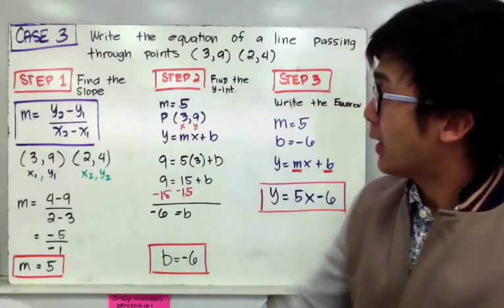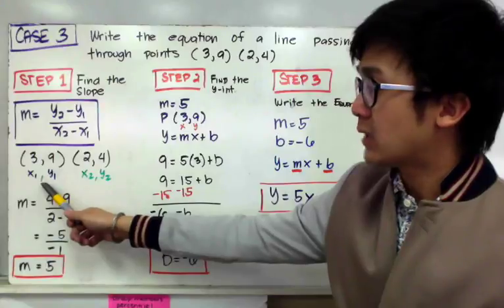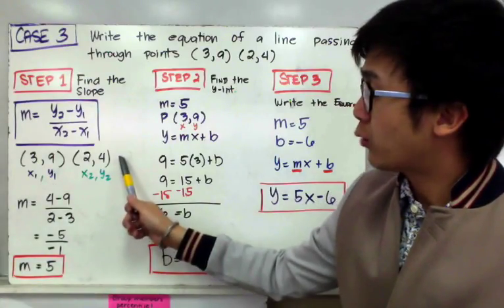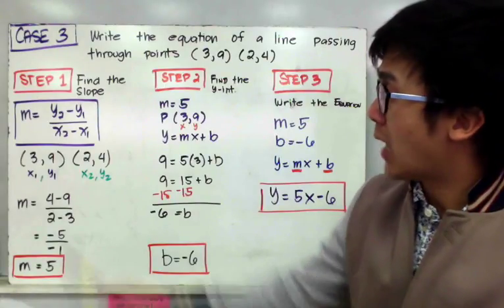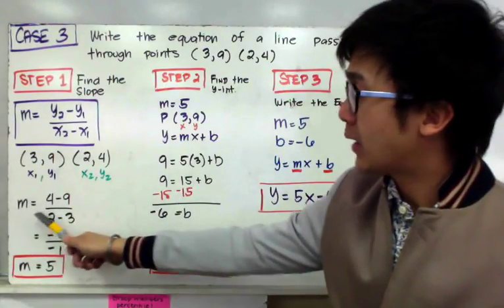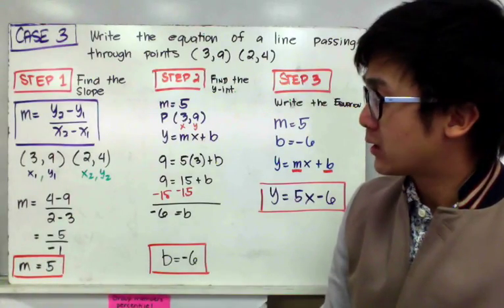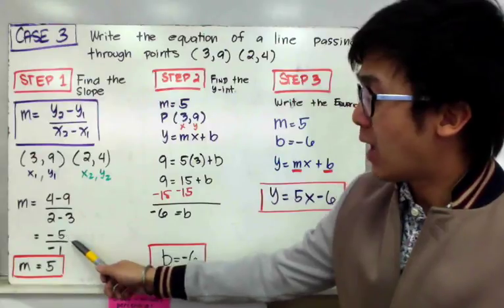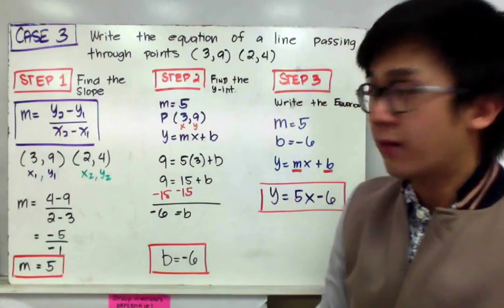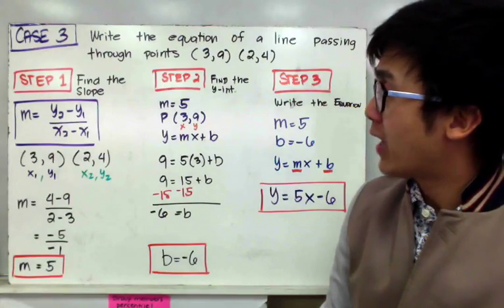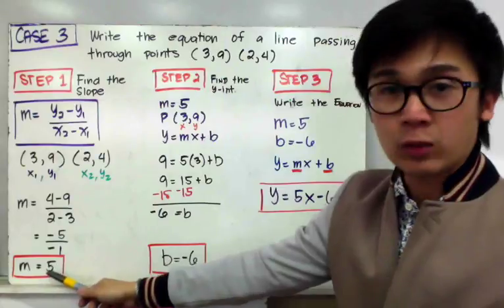By labeling our two points, the first point will be our first set of x and y, and the second point will have x₂ and y₂. By direct substitution into our formula, we'll have m equal to 4 minus 9 all over 2 minus 3. Simplifying, we get negative 5 all over negative 1, which gives us m equal to 5. So the slope of these two points is m = 5.